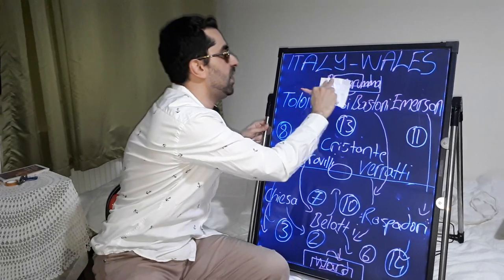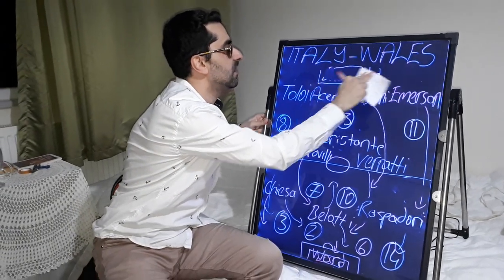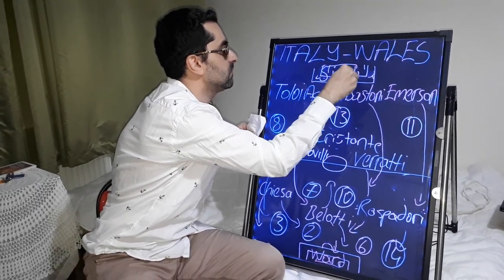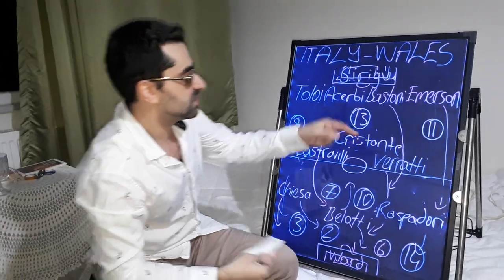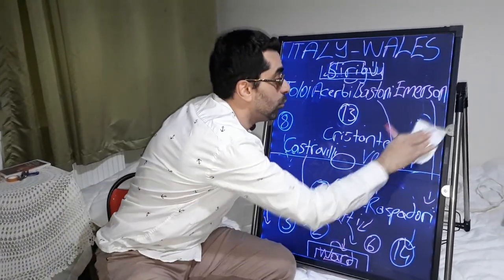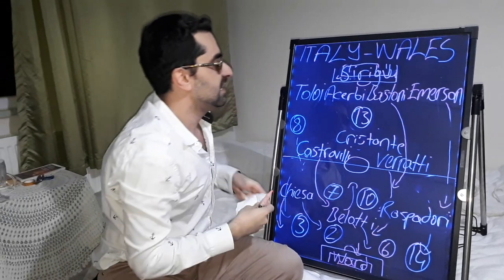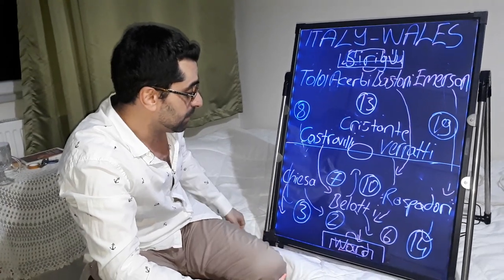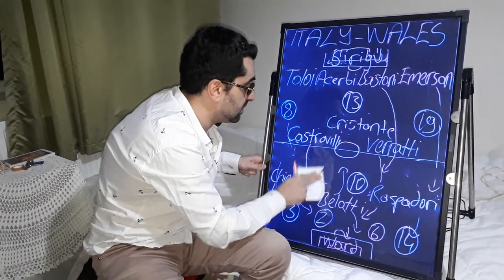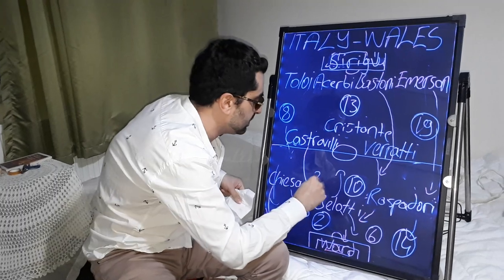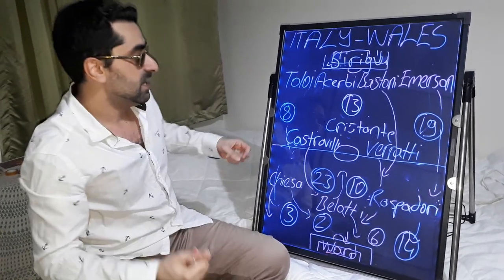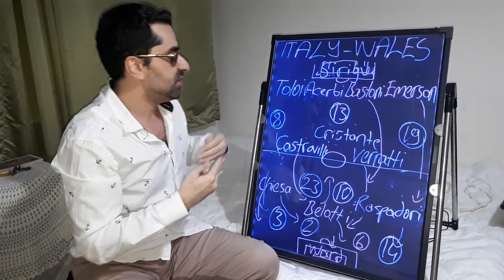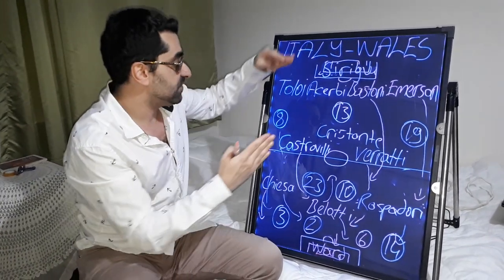Donnarumma came off as goalkeeper and Sirigu replaced him for Italy. For Wales, Gareth Bale came off and Brooks replaced him on the right wing. Then Joey Allen came off and Levitt replaced him in midfield. Until the end of the game, Italy dominated and got a very relaxed win against Wales.